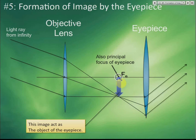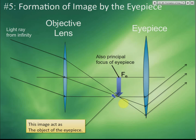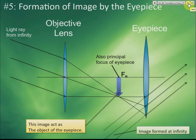Since the object is at the principal focus of the eyepiece, light rays from it emerge as parallel rays. We purposely place the eyepiece so its principal focus coincides with the principal focus of the objective lens, ensuring parallel exit rays. These parallel lines are extended to the back, and the final image forms at infinity.